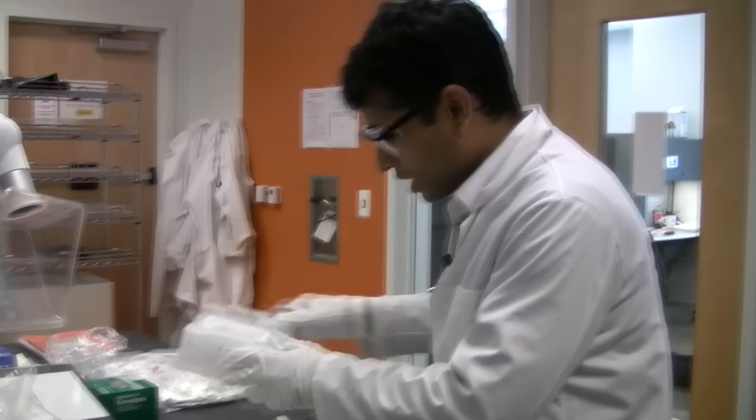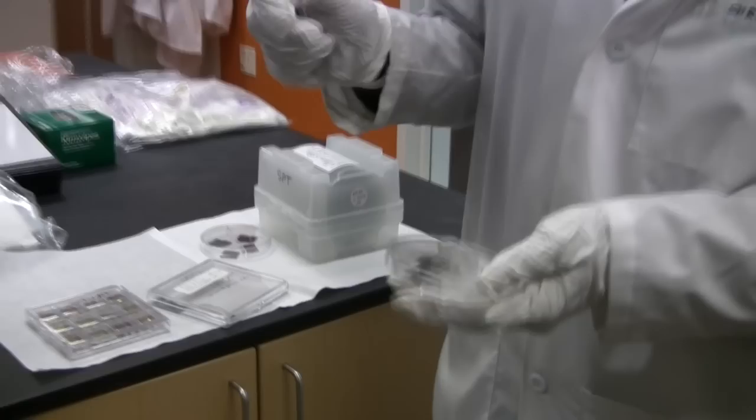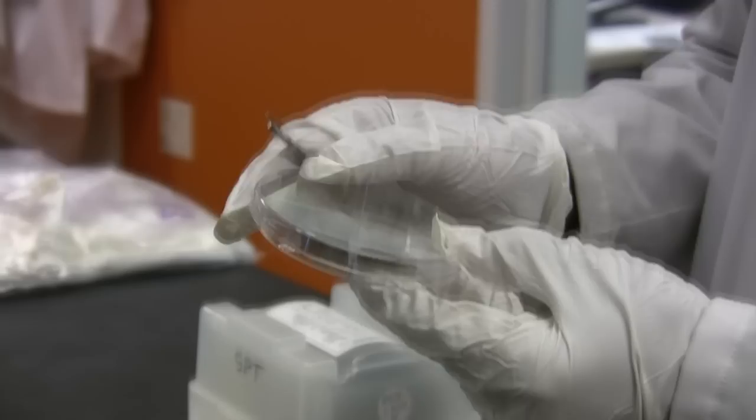So here I explain how we start with the substrate. We cut it down, either we can dice it in a properly nice manner, one inch by one inch, or if you just need small substrates, you can break it into pieces. So these are the substrates having gold in the bottom and photoresist on the top.